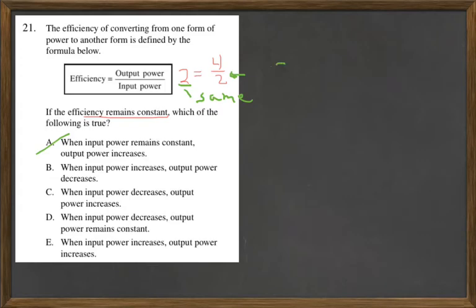So right now we have 2 equals, and let's make it a 3. Well, for it to stay a 2 on the left side, for this to be constant, well this would have to be a 6. So what happened? The output power increased. On B it says output power decreases, so it cannot be B.